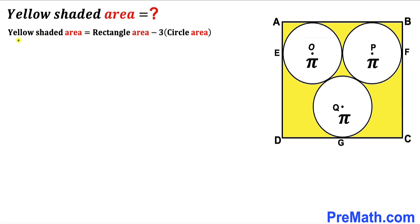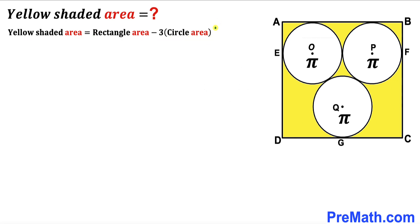The area of the yellow shaded region is going to be equal to the rectangle ABCD area minus the area of all three circles. We know the area of each circle is π square units, so our next task is to calculate the area of rectangle ABCD.